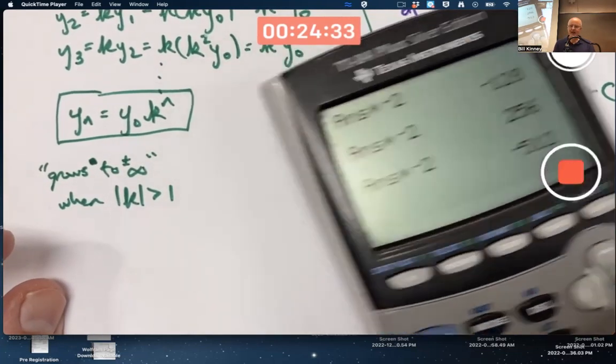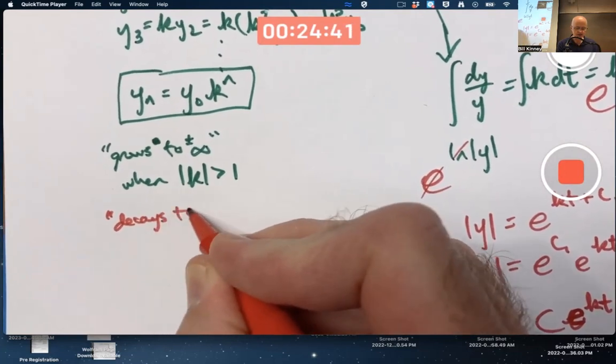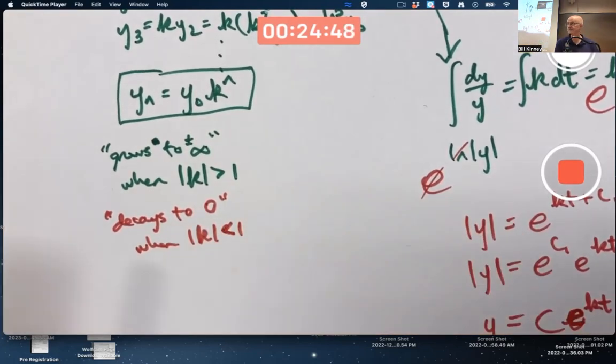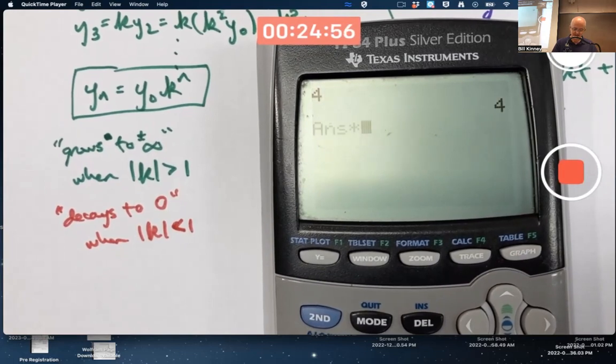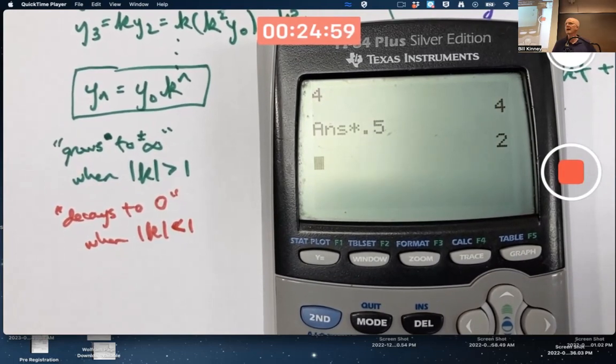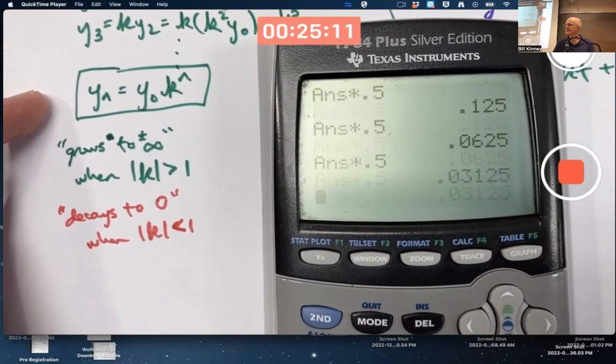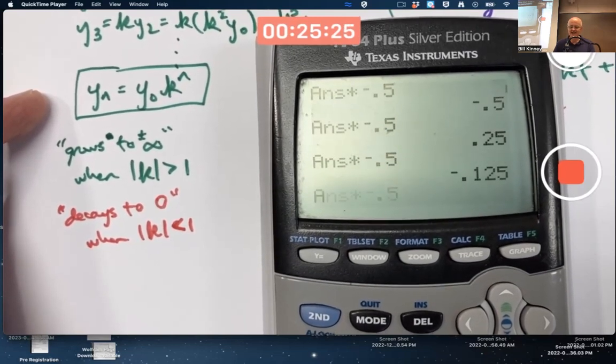On the other hand, if k has an absolute value less than one, it decays to zero when the absolute value of k is less than one, like a half. So if my initial value is four and k is a half, I keep multiplying by 0.5 when I use the difference equation. And again, I can think of it in terms of direct formula as well. But I keep hitting enter here. The numbers are decaying to zero. This works even if k is negative a half. Start with my same initial condition there. Multiply by negative 0.5. These are still going to zero, though they are oscillating in sign, positive, negative, positive, negative.